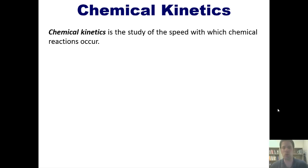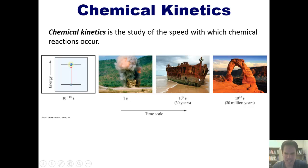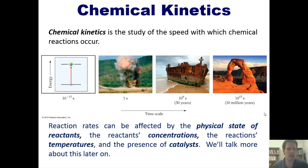Chemical kinetics is the study of the speed with which chemical reactions occur. For example, promoting an electron from one orbital energy level to another takes 10 to the negative 15 seconds. Detonating dynamite takes one second. Slowly decaying a barge takes 10 to the ninth seconds, or 30 years. The formation of an arch in southern Utah takes 10 to the 15 seconds, or 30 million years. Reaction rates can be affected by the physical state of reactants, the reactants' concentrations, the reaction's temperatures, and the presence of catalysts.